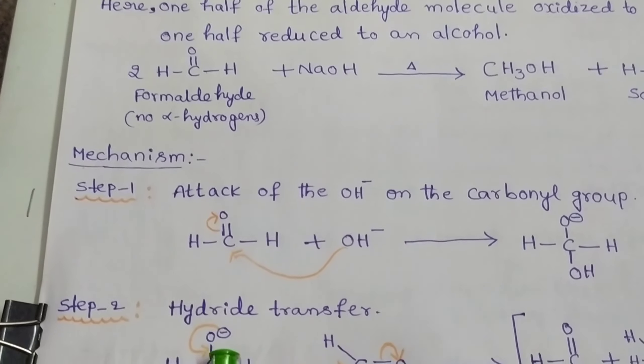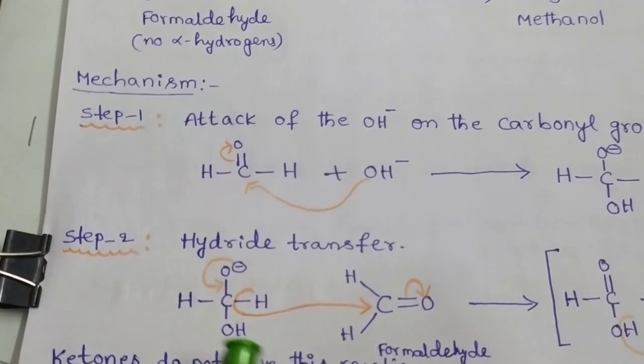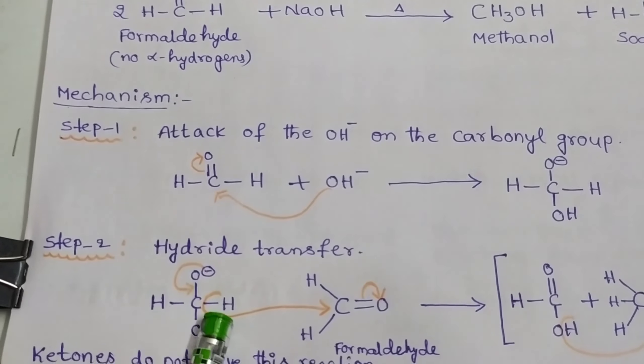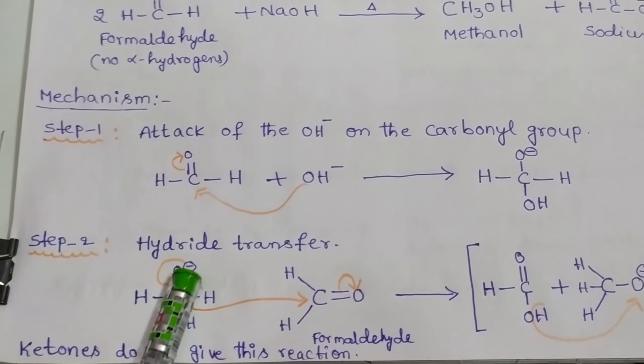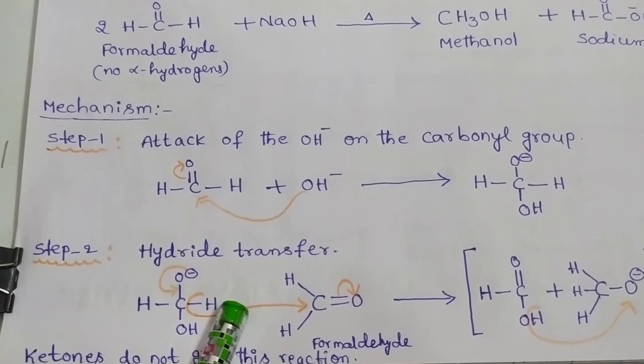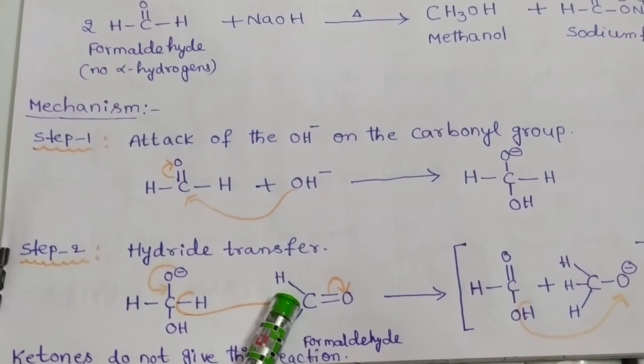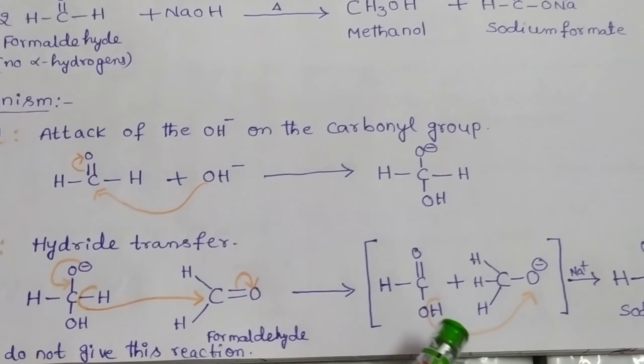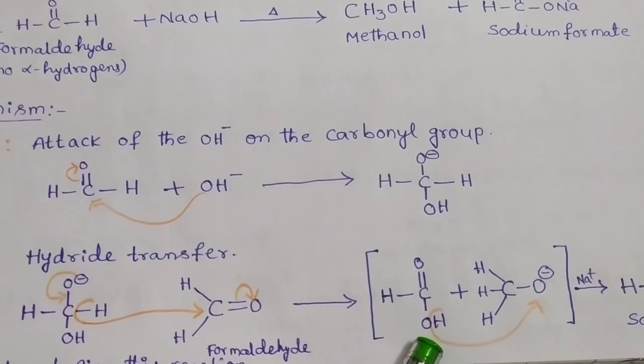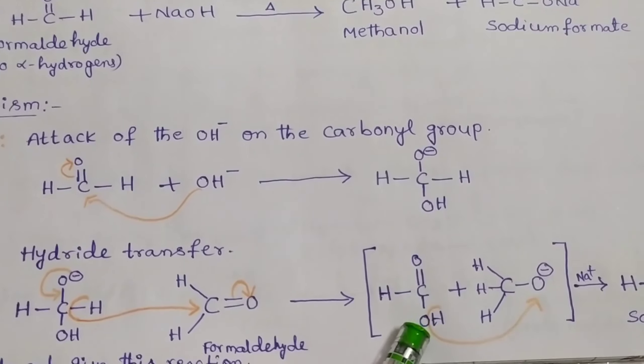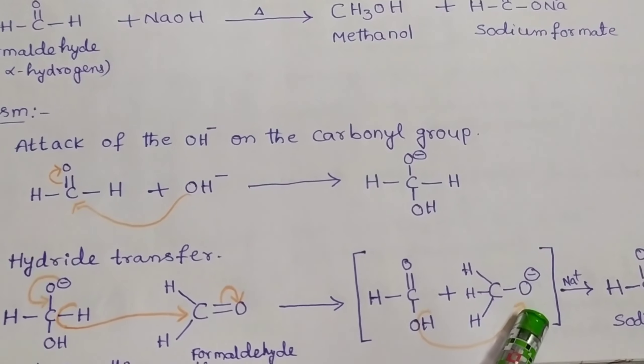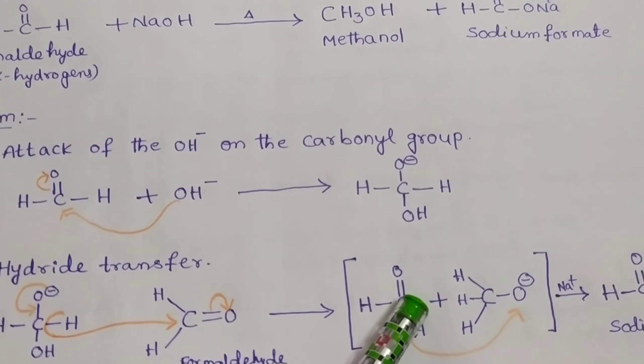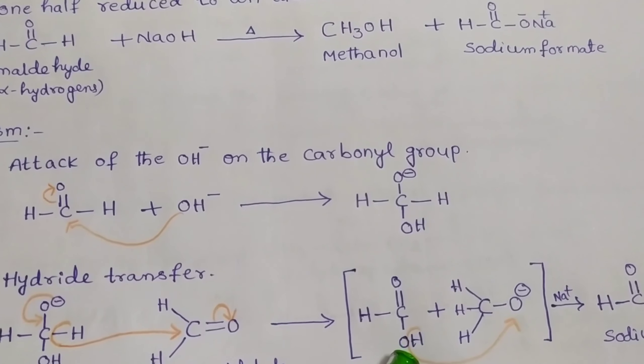In step two, hydride transfer takes place. The formed product containing hydride, that means H minus ions, which will be shifted to another formaldehyde molecule, form formic acid HCOOH and CH3O minus anion.